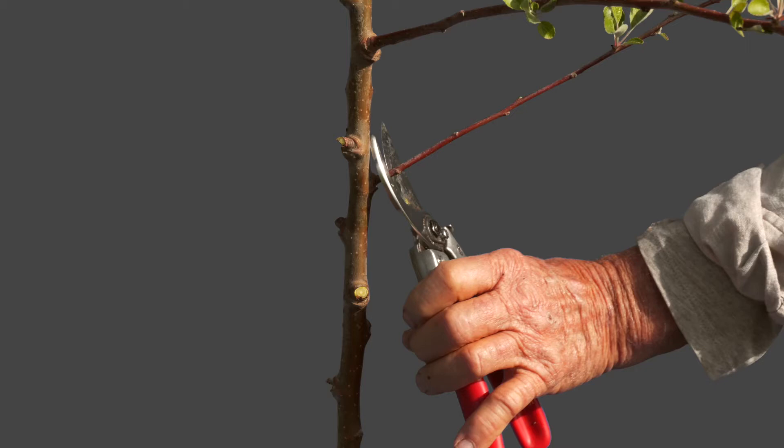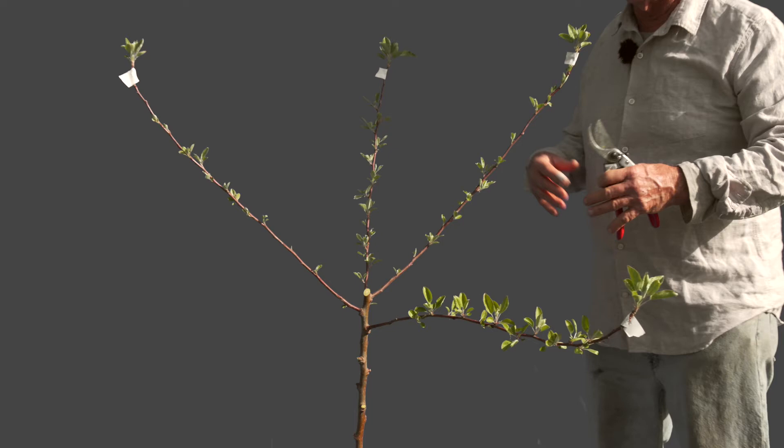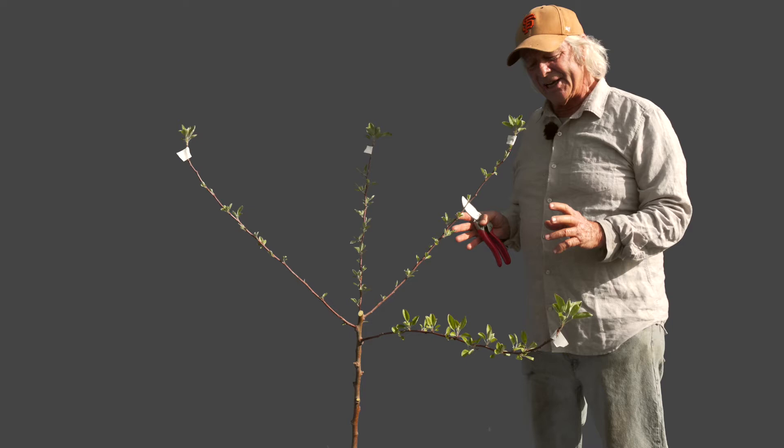Again, a thinning cut is when you cut a branch out at its point of origin, leaving no real stub. So I have four branches again, really nice placement. That's good.